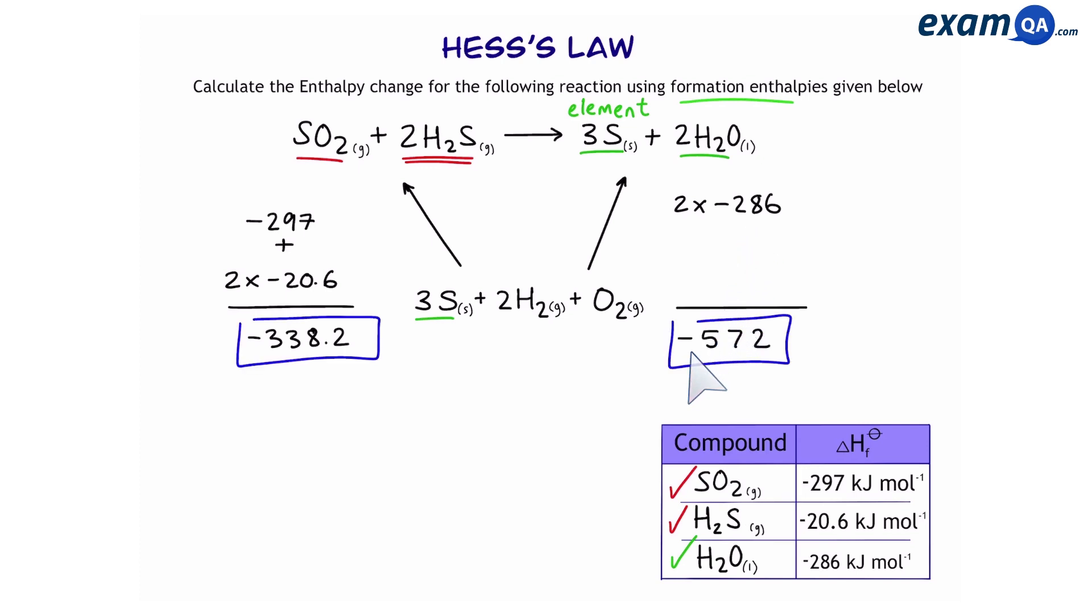Now, before adding minus 338.2 with minus 572, let's have a look. Hess's law says to go from here to here, we go from here to here, and then from here, back to here. So which of my arrows is not going in accordance to Hess's law? It's this one. That means I'm going to have to change the sign on the minus 338.2 to plus 338.2. Now I'm ready to add them together. And that should give me a final answer of minus 233.8. And this is the value for the enthalpy change of the reaction above. So in this example, we've done a formation cycle. In the next video, we're going to do a combustion cycle.